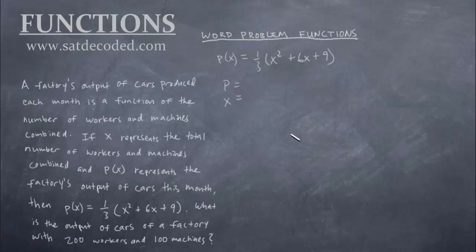So again, we want to identify what our function is. So I'm just going to rewrite it again: one third times the quantity (x² + 6x + 9). Then we want to identify our variables. This time we only have two variables. We have a p and we have an x. But remember, p is the same thing as p(x). It just means the value of the function p when evaluated at whatever x happens to be. So let's figure out what x actually is. It says x represents the total number of workers and machines combined. So how many workers and machines combined do we have? Well, we have 200 workers and 100 machines. So if we combine them, that means add them, 200 + 100. That means x is 300.